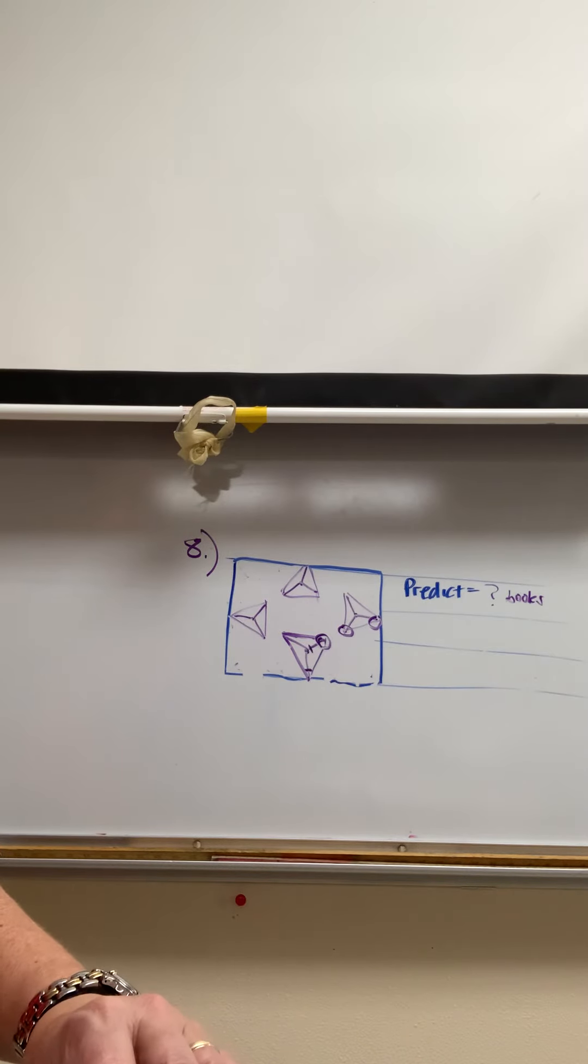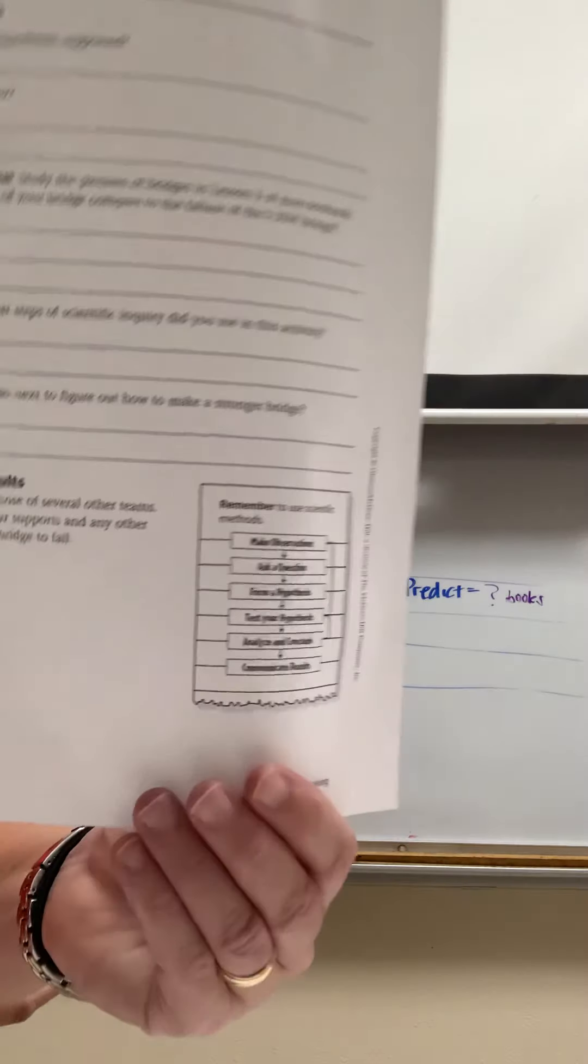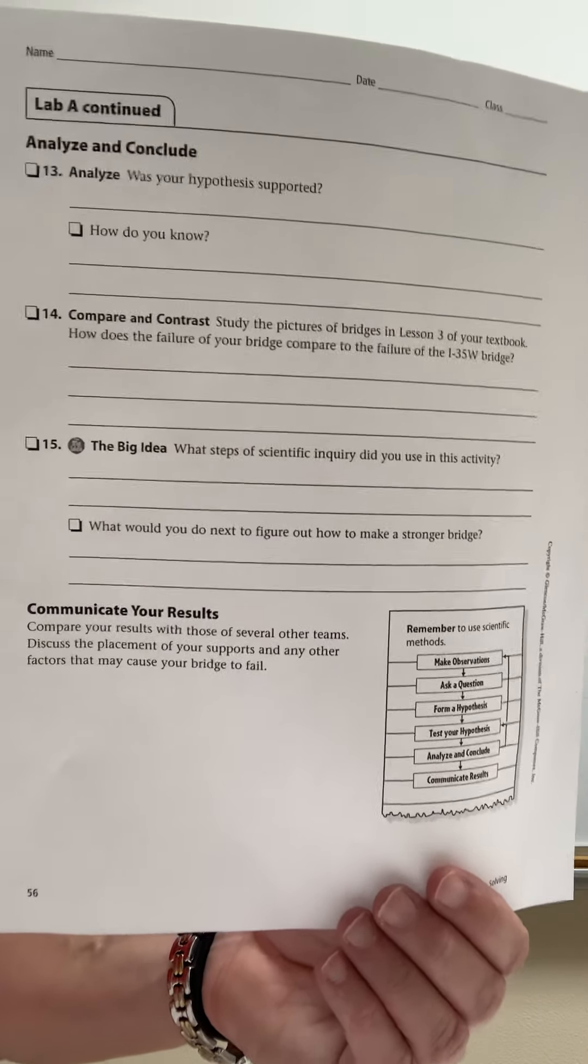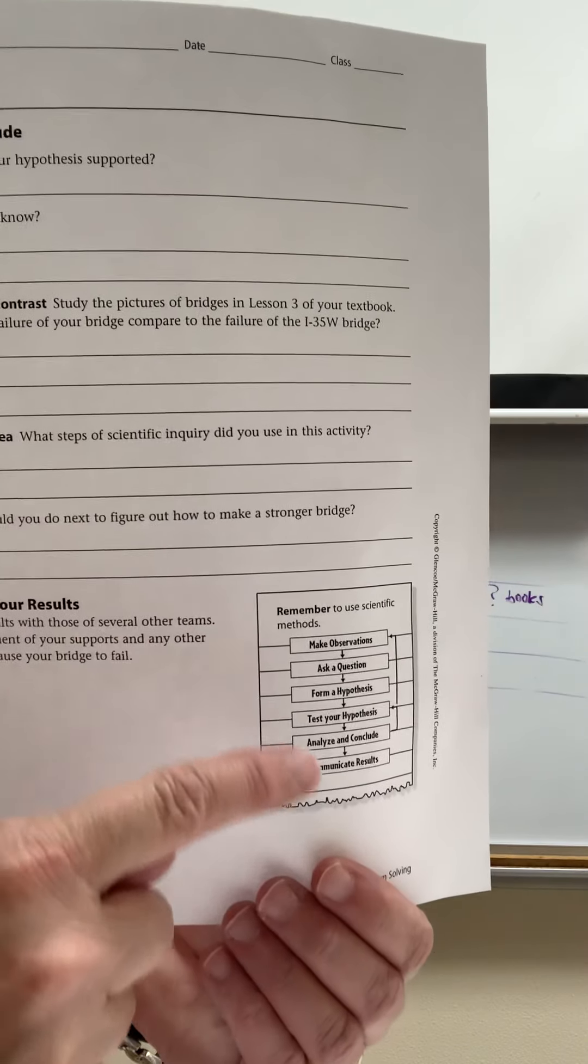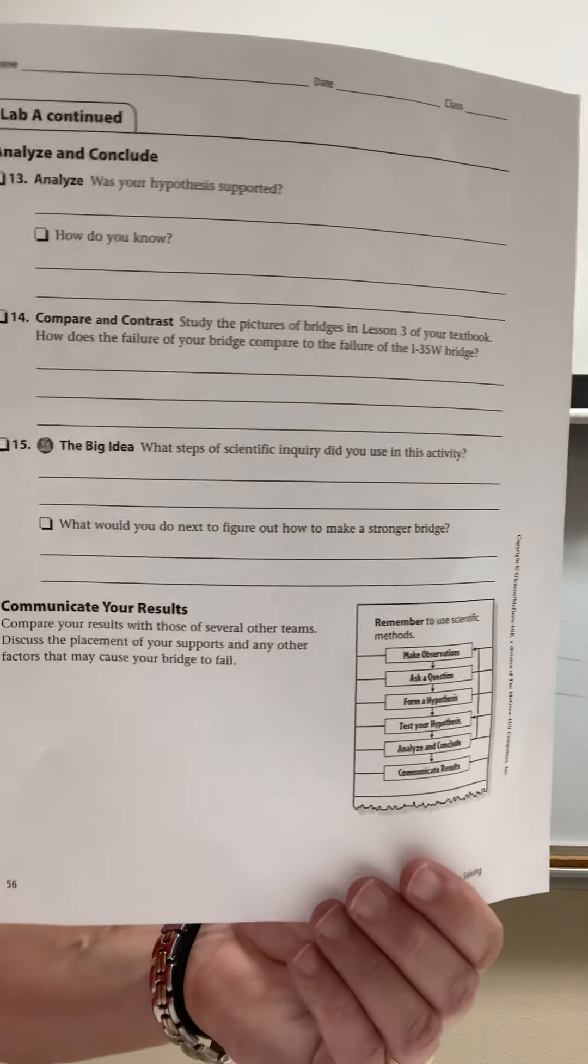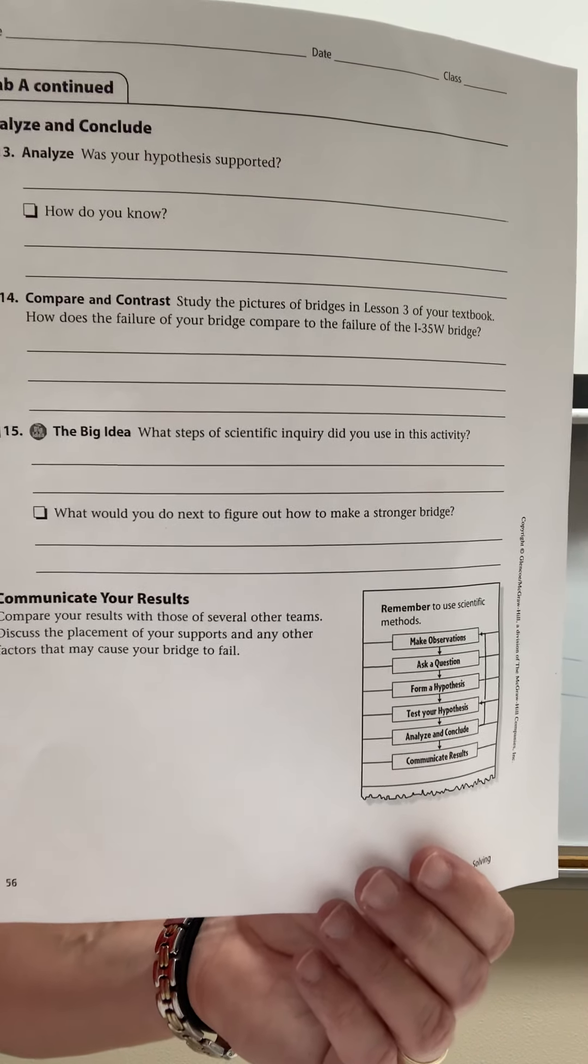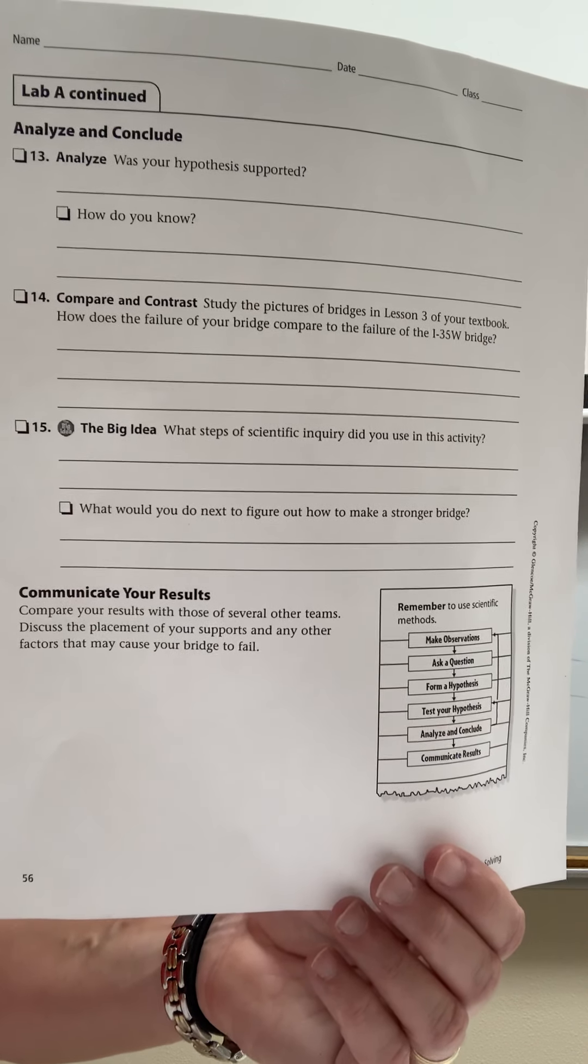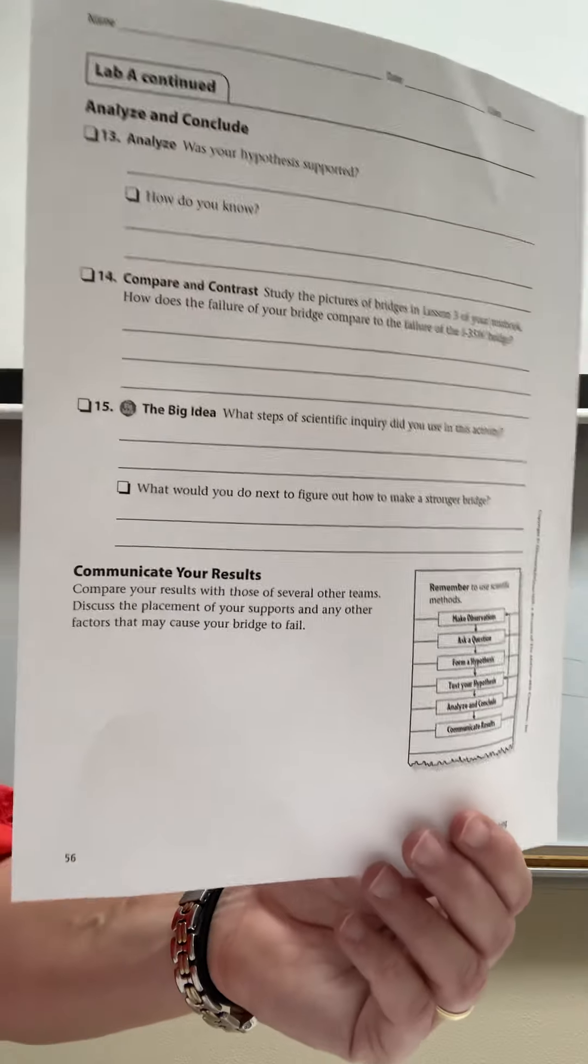Number fifteen: what steps of the scientific inquiry did you use in the scientific experiment? You're looking at this list; they give you a list if you forgot, and you're looking through it to see which ones of those that you completed in your investigation. That goes on number fifteen.